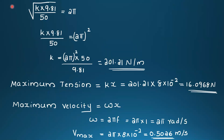Substituting values: square root of k times 9.81 divided by 50 equals 2π. Squaring both sides and solving: k equals 4π² times 50 divided by 9.81, giving k equal to 201.21 Newton per meter.